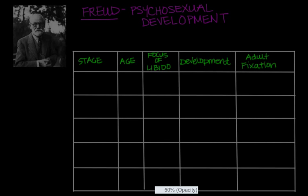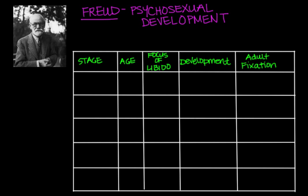Let's dive right into our first theory of development. We're going to take a look at Freud's psychosexual theory of development. Freud proposed that psychological development in childhood takes place in a series of fixed stages called psychosexual stages. He believed that life was built around this concept of tension and pleasure, and that the buildup of tension could cause a lot of conflicts.